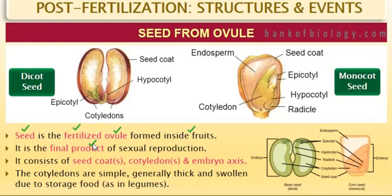The baby plant, or seedling, arises from the seeds. Now, a seed consists of the seed coat, cotyledons, and the embryonal axis. The seed coat is the outer part of the seed. Cotyledons may be one or two parts.